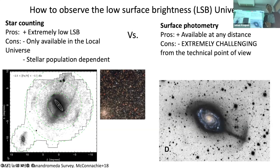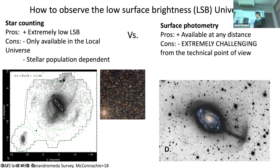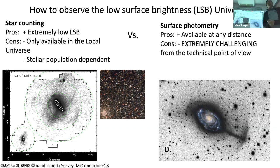So how can we observe the low surface brightness universe? Basically two main approaches. On the left is star counting — you look at individual stars and build up the image of the galaxy from measures of individual stars. The advantage is that you can reach extremely low surface brightness levels. The disadvantage is that you can only do this very locally because you need to resolve individual stars, so it's only available in the local universe. As an illustration, here is a picture of Andromeda and its neighbors, built up from measures of individual stars.